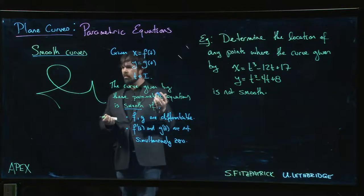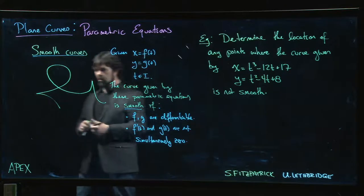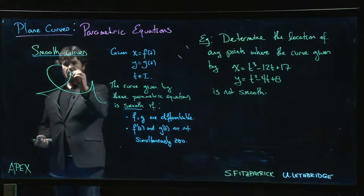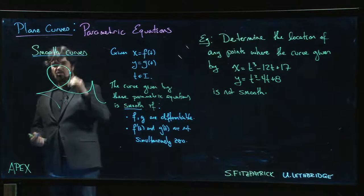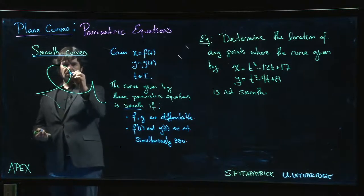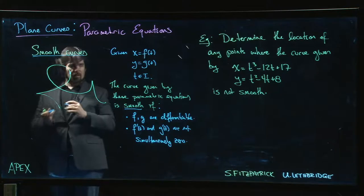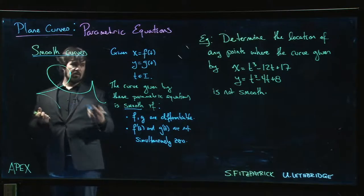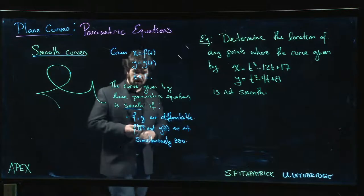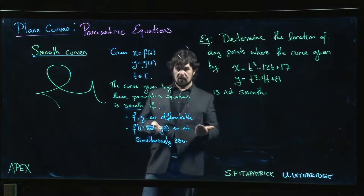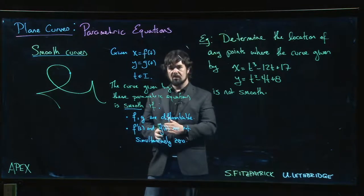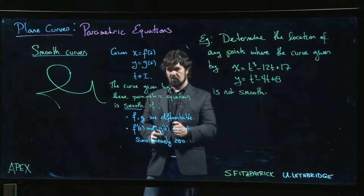If you think of parametric equations as describing projectile motion, describing the position of some object traveling this curve, giving the x and y coordinates as functions of t, then f prime of t is giving you the rate at which the x coordinate is changing, g prime of t is giving you the rate at which the y coordinate is changing.